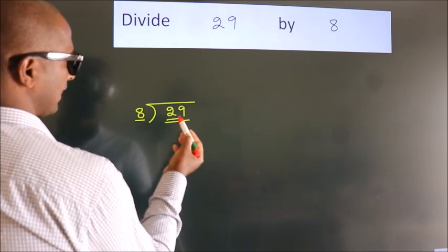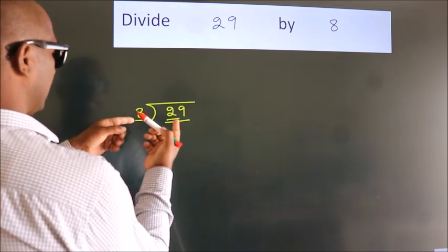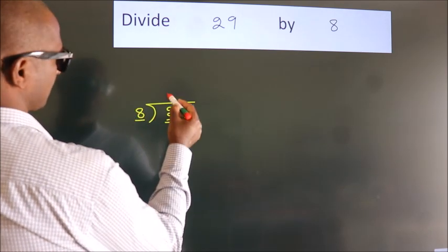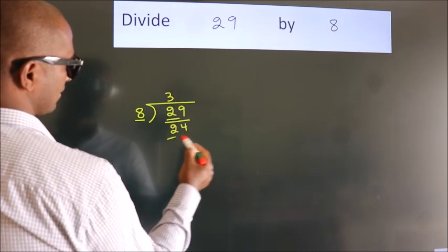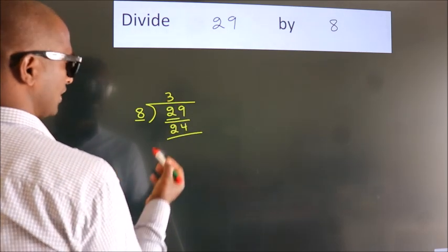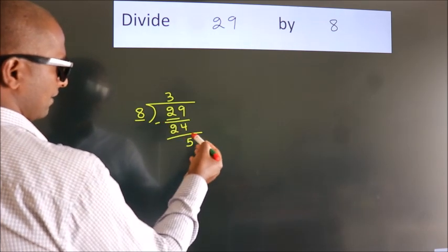should take two numbers, 29. A number close to 29 in the 8 table is 8 times 3, which is 24. Now we should subtract. We get 5 after this.